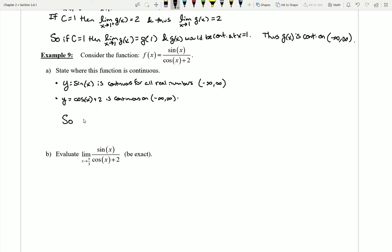So when I put these together I can see that the top of the function and the bottom of the function are always going to be continuous. Now the only thing I have to make sure of again is that the denominator is never going to be equal to zero.